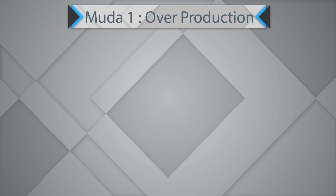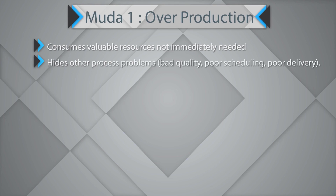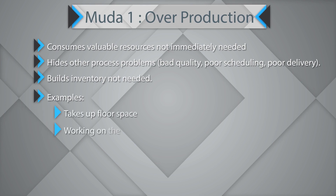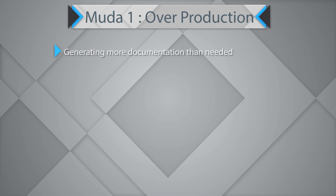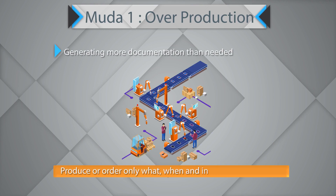The first Muda is overproduction. Overproduction shall consume valuable resources which are not immediately needed. It hides other process problems like bad quality, poor scheduling, or poor delivery, and it builds inventory which is not needed. Examples include taking up floor space, working on wrong priority work, or generating more information, reports, or paper than can be processed, or more data and documentation than required. Produce or order only what, when, and in the quantity needed.